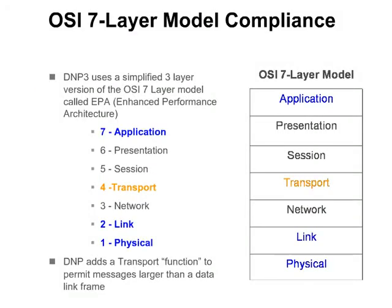Let's look in more detail at how DNP messages are formatted. The International Organization for Standardization, or ISO, has defined a communication architecture called the Open System Interconnection, or OSI, reference model. This model separates the functionality into seven separate layers. It is customary to reference the OSI seven-layer model in protocol discussions, although very few protocols implement the entire seven-layer stack.